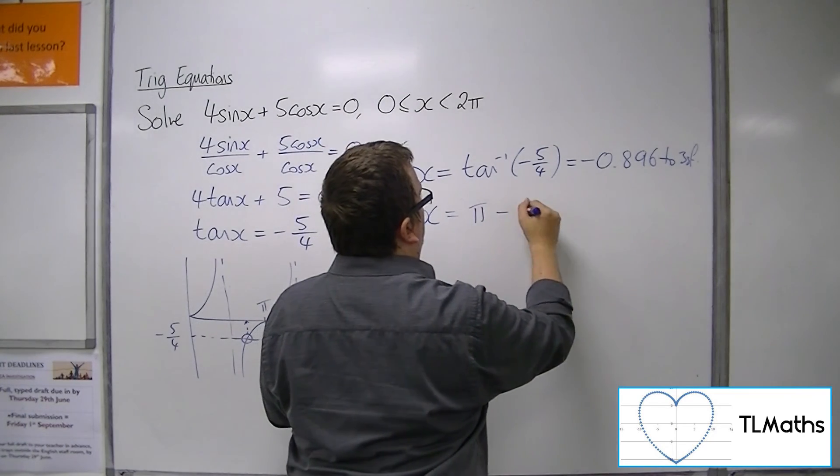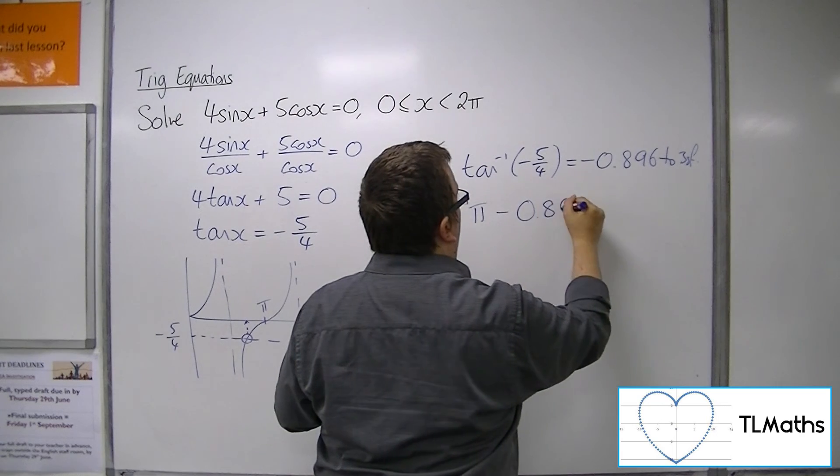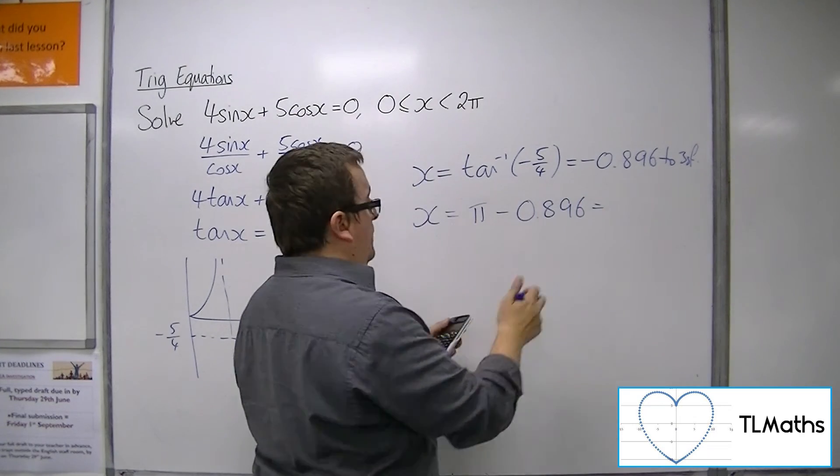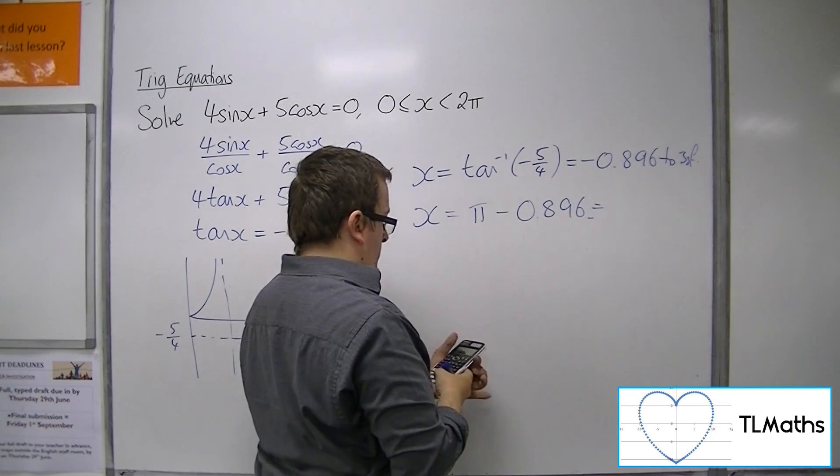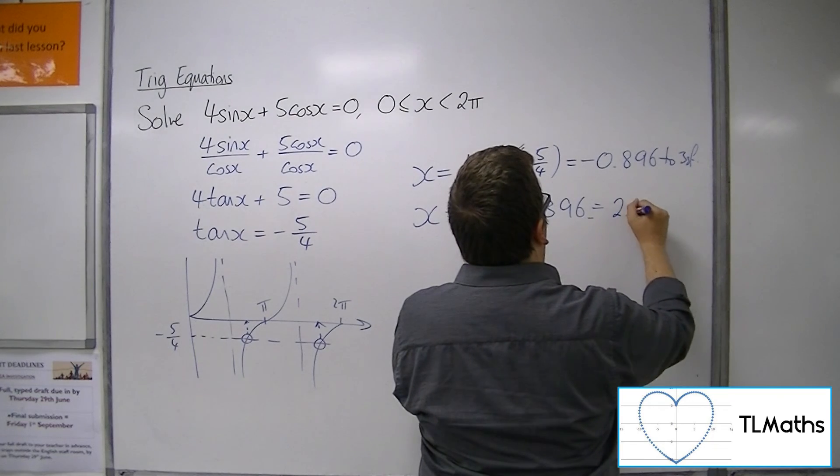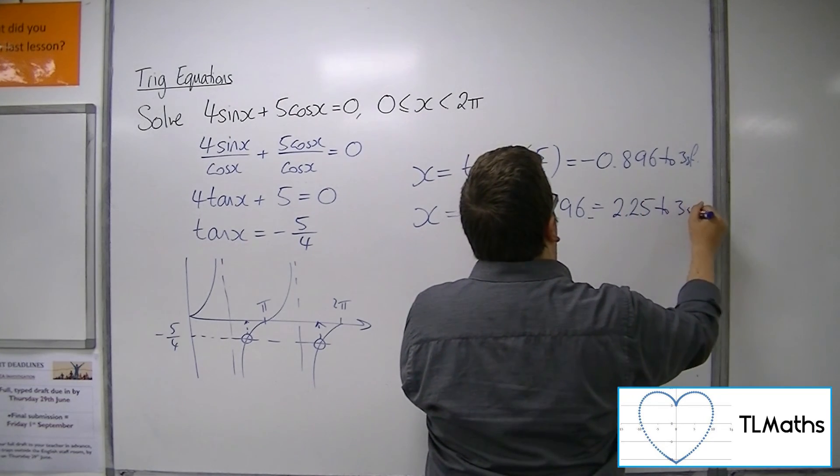So π plus the -0.896 gets me 2.25 to 3 significant figures.